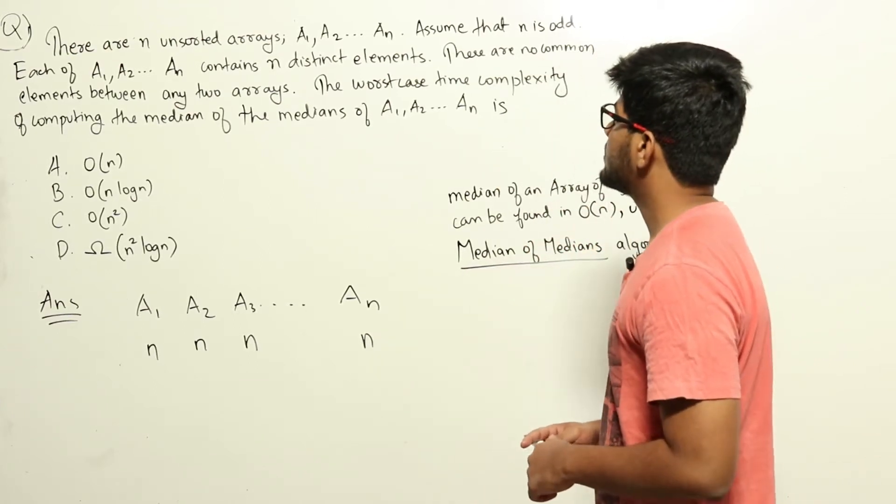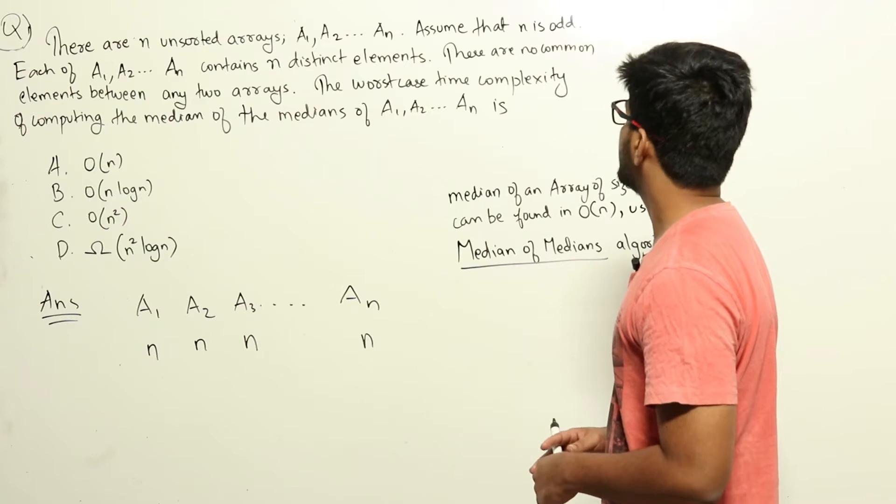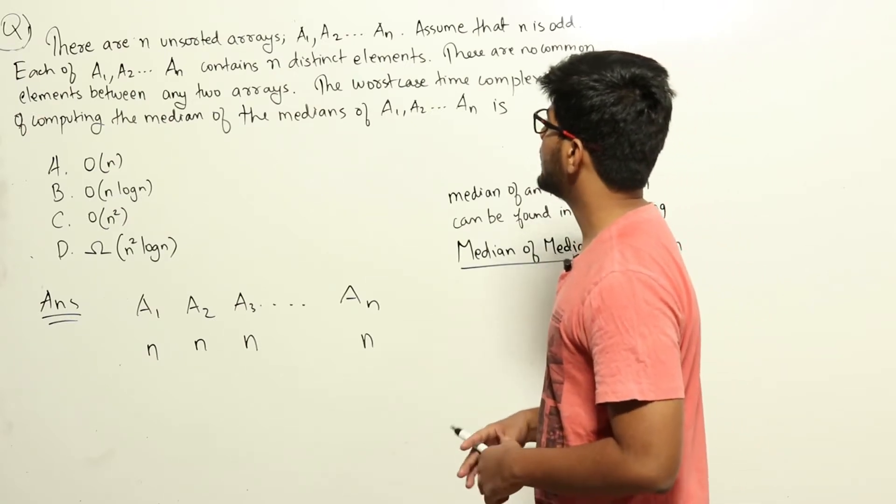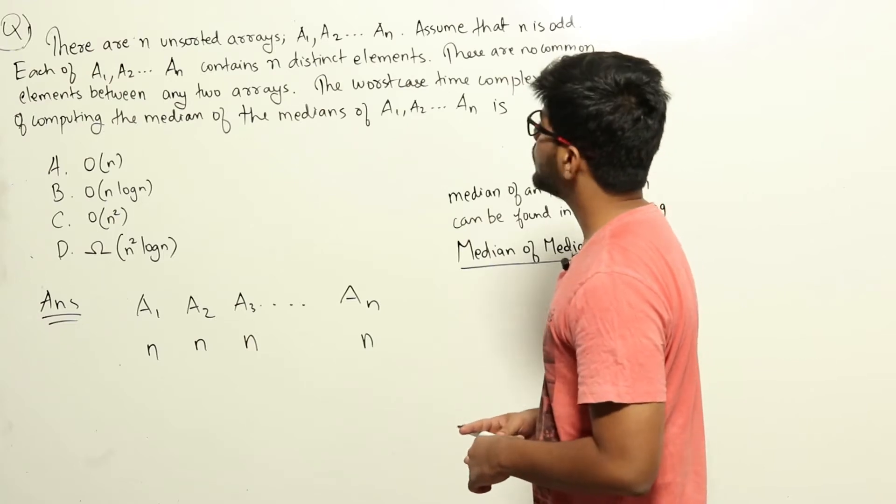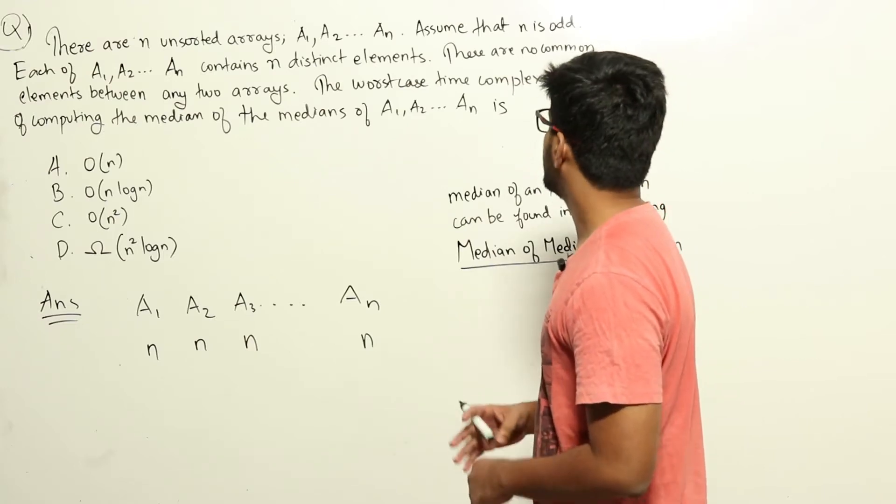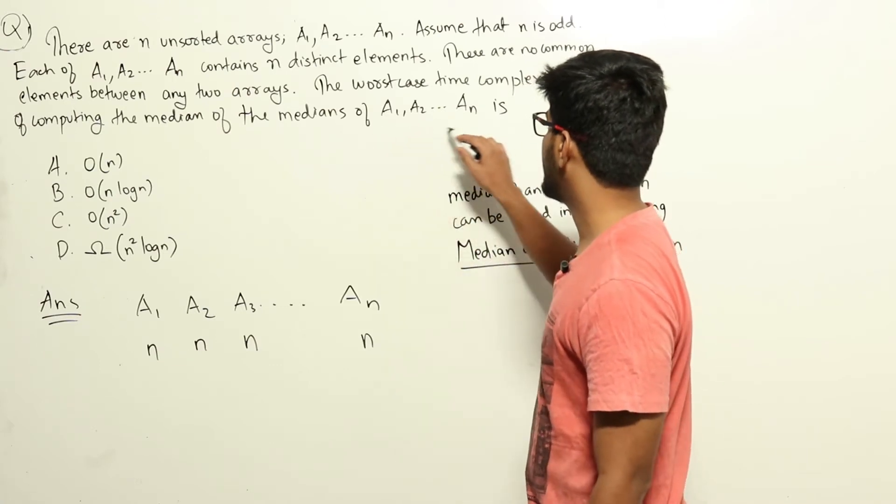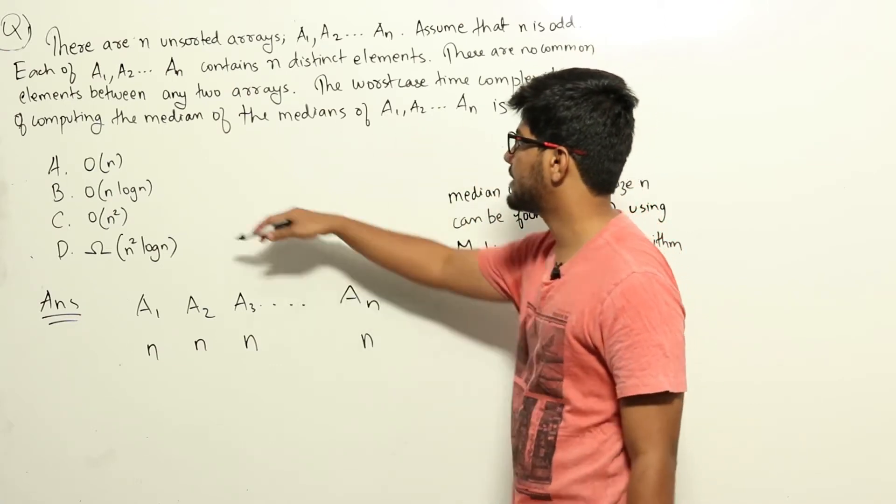There are n unsorted arrays a1, a2, etc. up to an. Assume that n is odd. Each of a1, a2, an contains n distinct elements. There are no common elements between any two arrays. The worst case time complexity of computing the median of medians of a1, a2, etc. up to an is dash. Four options are given here.